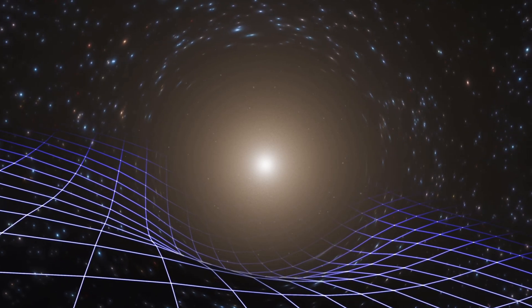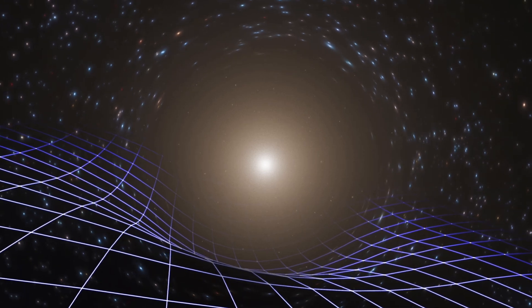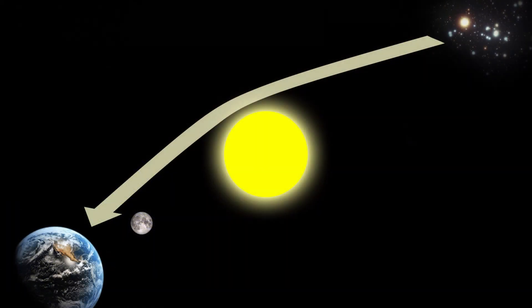This idea was spectacularly confirmed in 1919 during a solar eclipse. Stars whose light passed close to the sun appeared shifted from their usual positions because their light was bending around the sun, following the curved space-time.